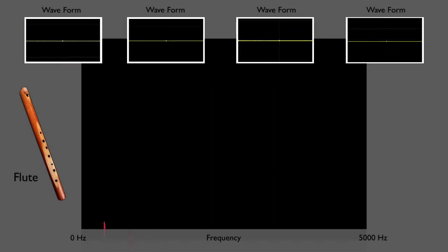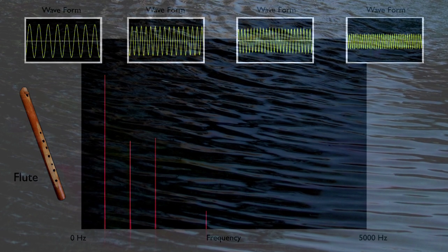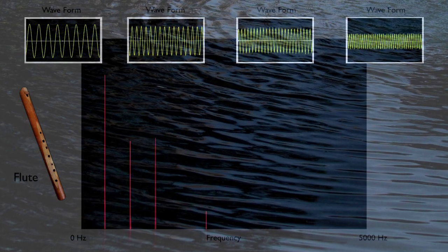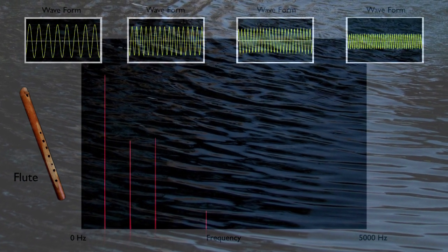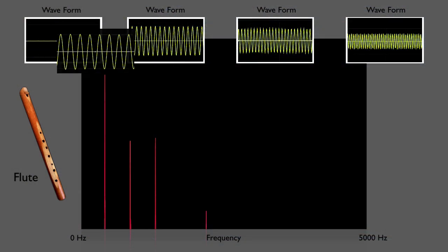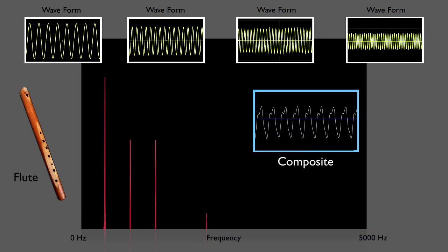What would those waves look like if you added them all together? Yes, like ripples on a pond, waves can overlap, which means they add together. Well, they'd look like this, which we can call a composite wave.